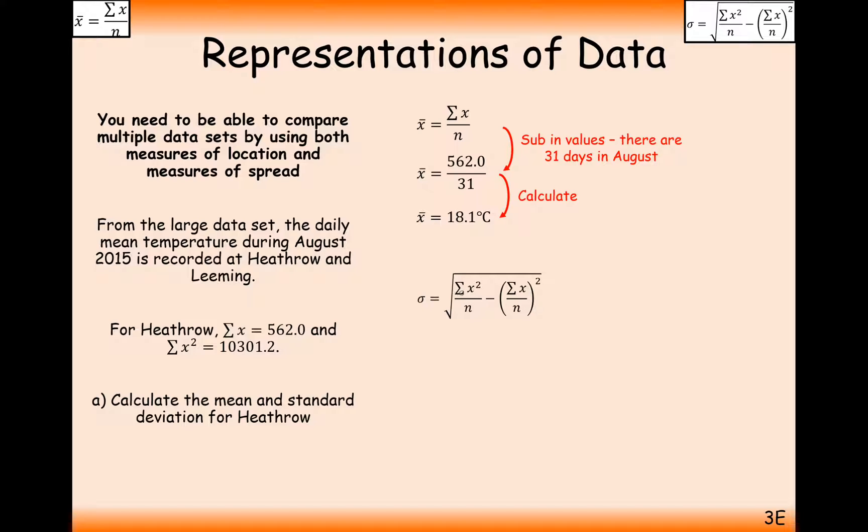For the standard deviation, here is your formula, and they've already given to you the sum of x squared, and you can use your previous answer to get this bit that's inside the bracket. So we substitute in the numbers, and calculate, and we get 1.91.